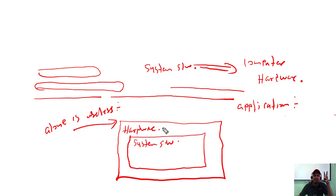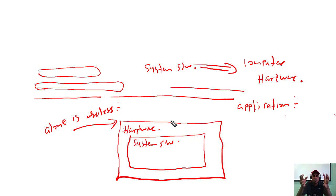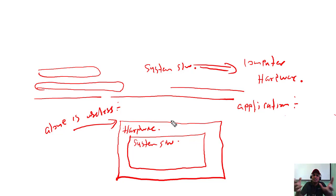Hardware means the tangible things you can touch and feel. Computer hardware is the physical component of a computer system that you can touch and feel. Hardware alone is useless without the operating system. For example, when you go and buy a laptop from a shop, if the operating system is not installed, you cannot use it — it's just a piece of metal.